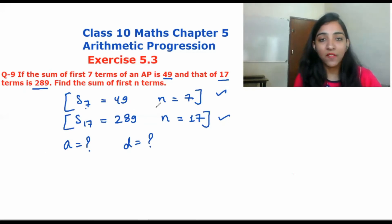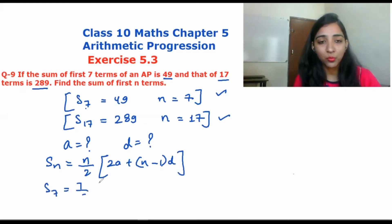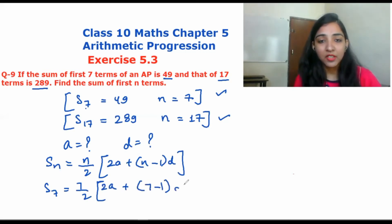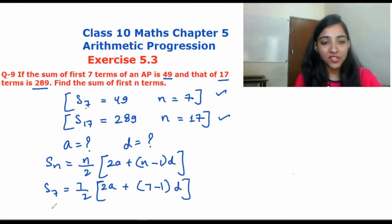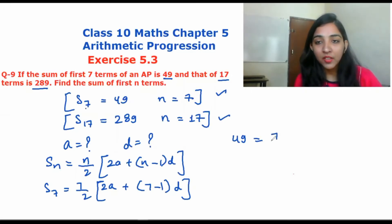When n is equal to 7, the formula is Sn = n/2 × (2a + (n−1)d). So S7 = 7/2 × (2a + (7−1)d), and we know S7 = 49.